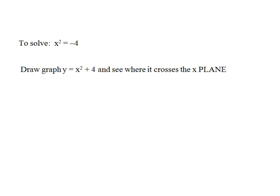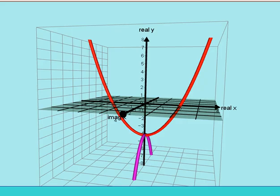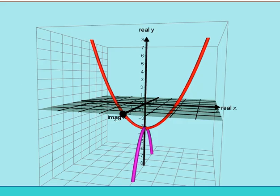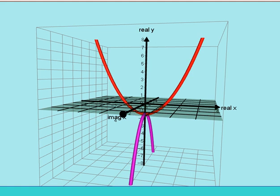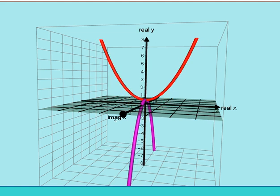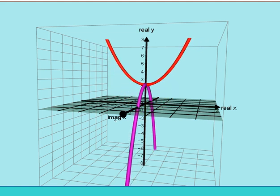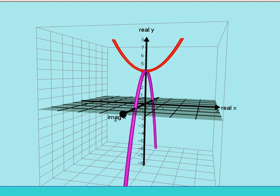Now, to solve the equation x squared equals negative 4, we would draw the graph of y equals x squared plus 4 and see where it crosses, not the x-axis, but the x-plane. I'm changing the graph into y equals x squared plus 4.